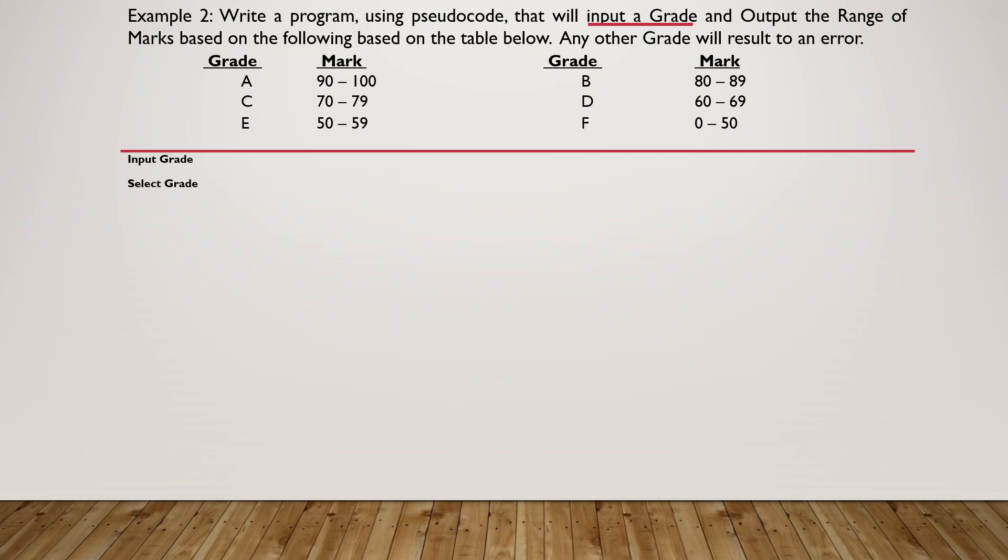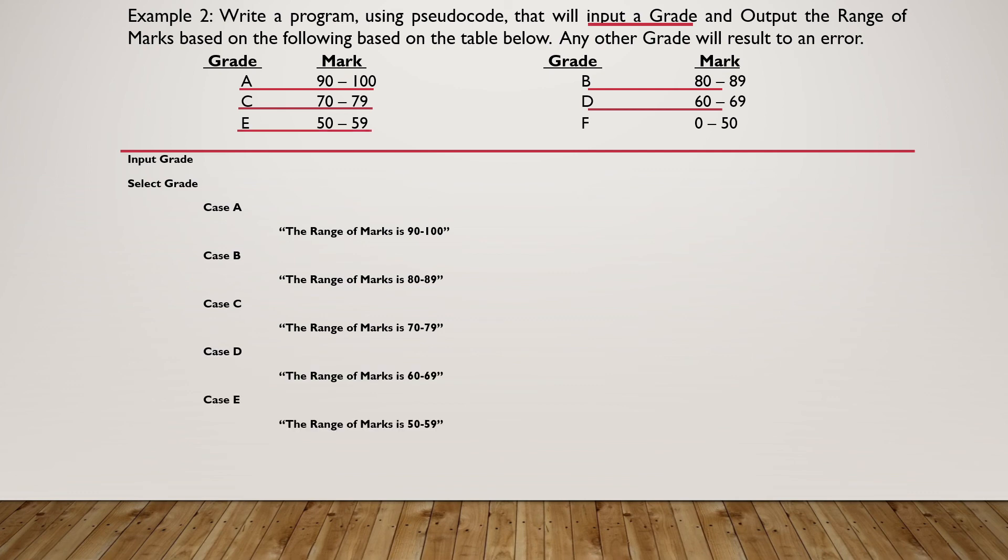And then we are going to select this grade so that we can go through the different cases. So for case A, if the grade is equal to A, the range is between 90 and 100. Case B, 80 and 89. Case C, 70 and 79. Case D, 60 and 69. Case E, 50 and 59. Case F, 0 to 50.